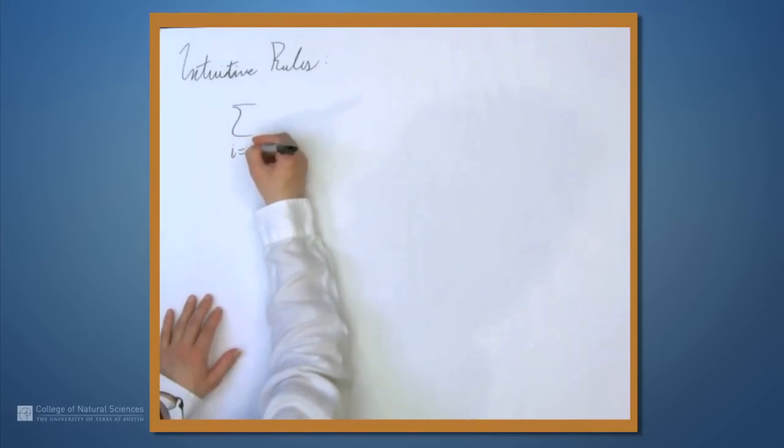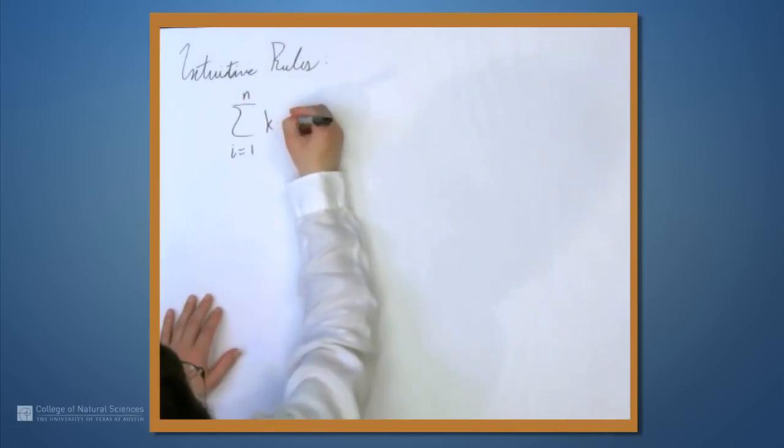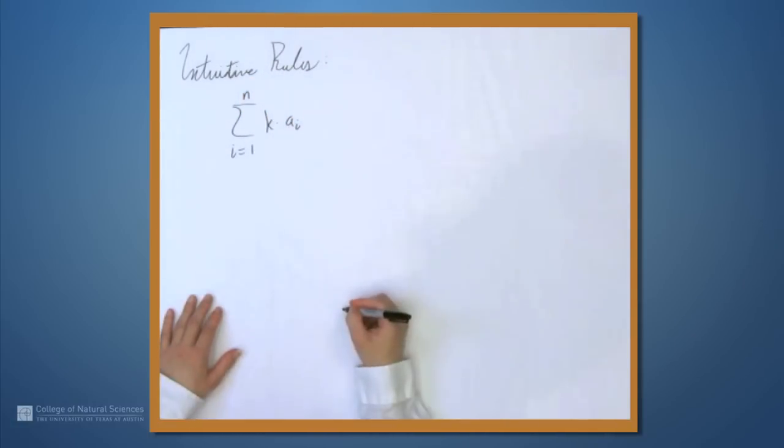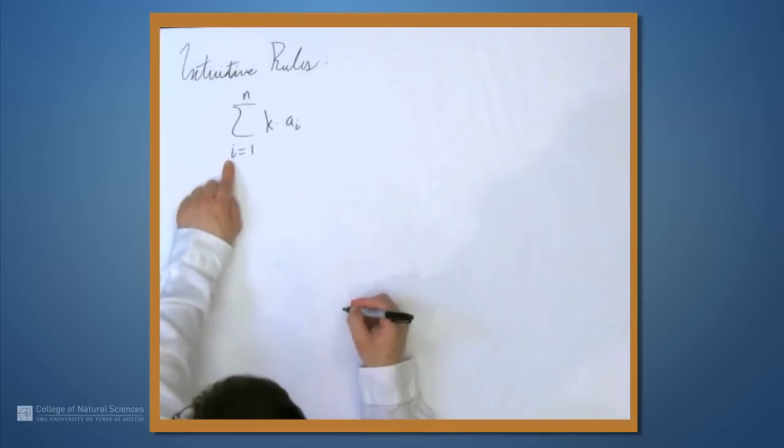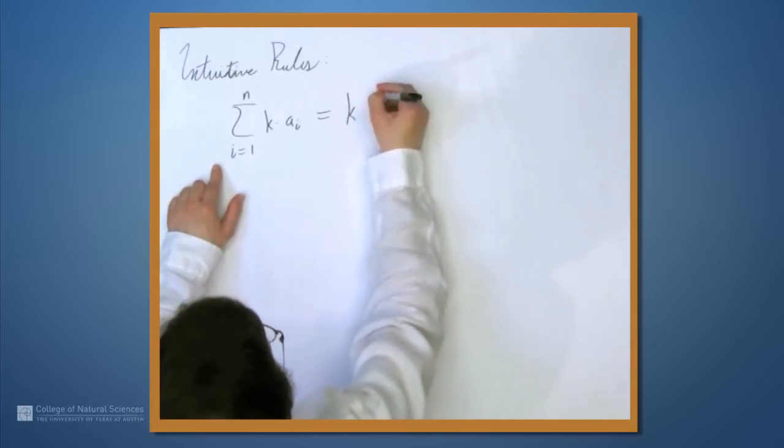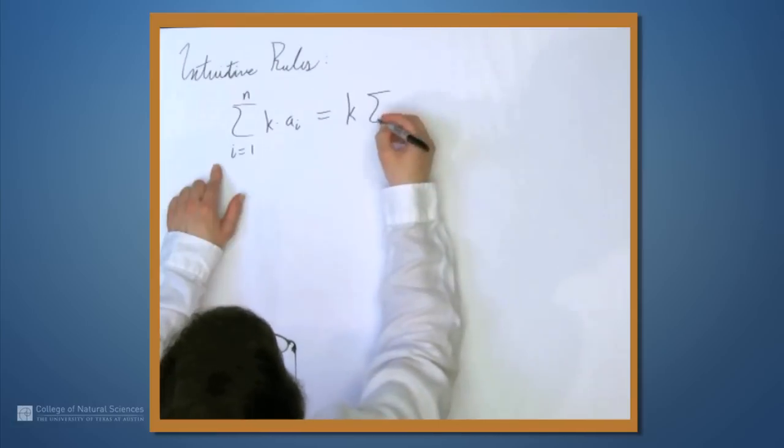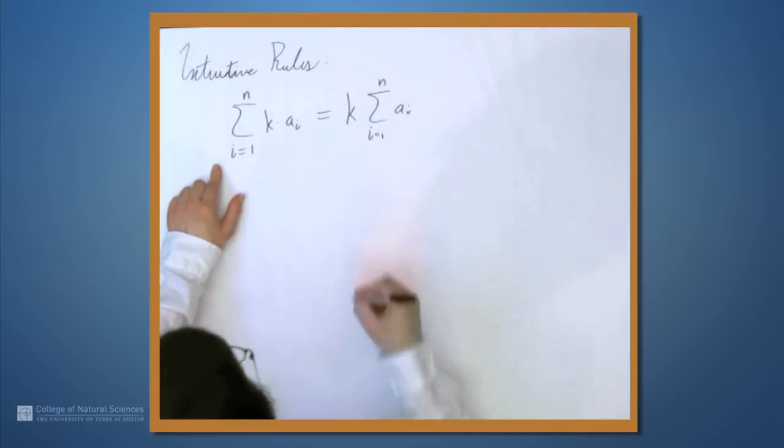So, for example, the sum from i equals 1 to n of k times a sub i, where k is a constant and a sub i is some expression possibly involving i. Well, we can factor this constant out front. So this is equal to k times the sum from i equals 1 to n of a sub i.